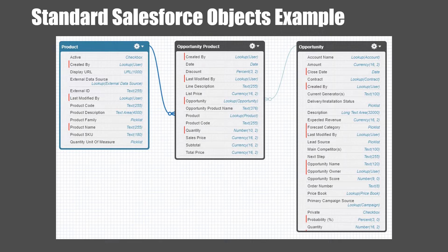The standard junction object available in Salesforce is Opportunity Product. This junction object called Opportunity Product has two master detail relationships: a master detail relationship from Opportunity Product to Product, and a master detail relationship to Opportunity.